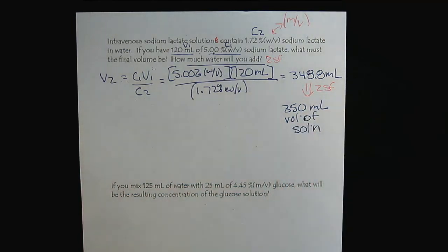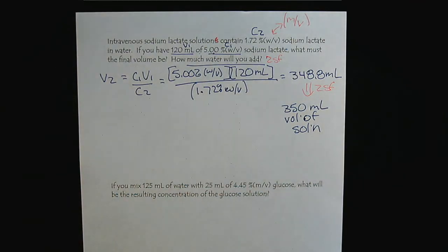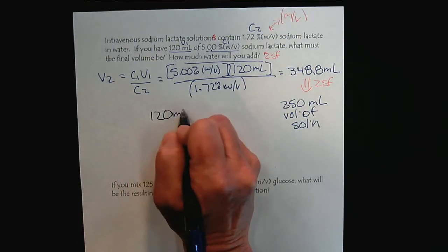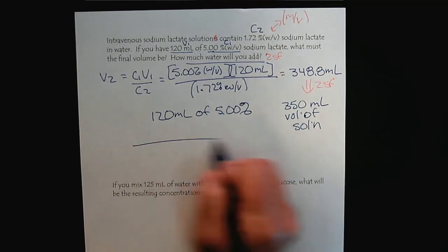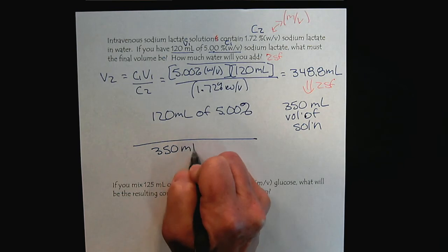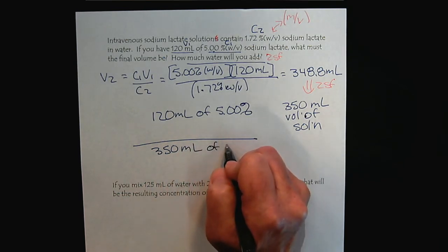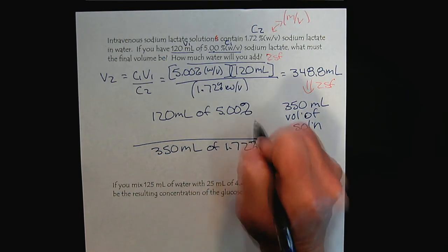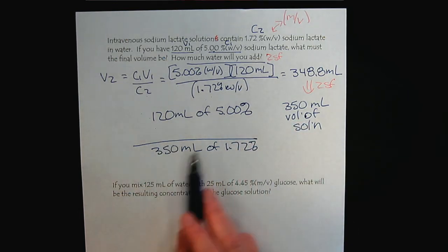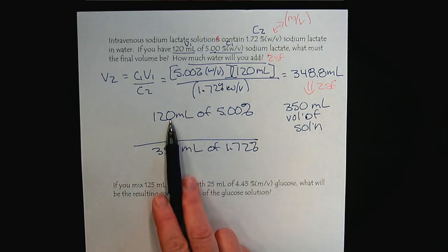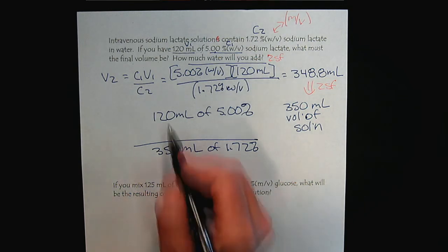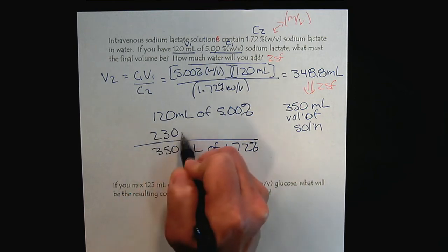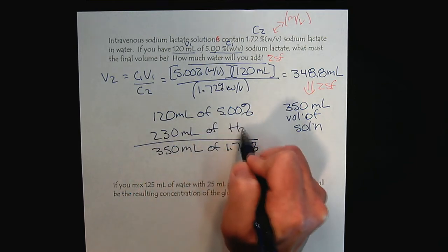But now, let's think back to the beginning. How we actually physically do this solution. We will have 120 milliliters of the 5%. We want to have a final volume of the 1.72%. How much water do we add? We already have 120 mils and we want our final volume to be 350. We're going to have to add 230 milliliters of water.